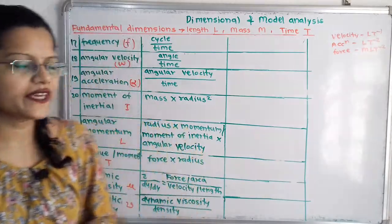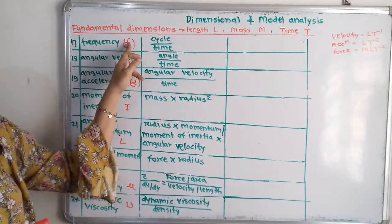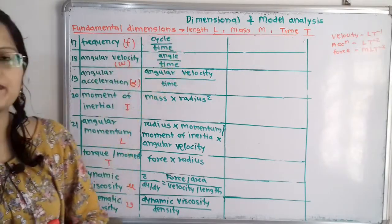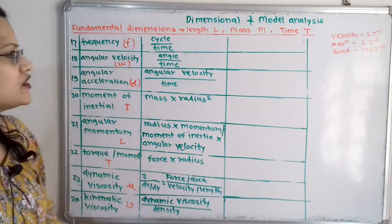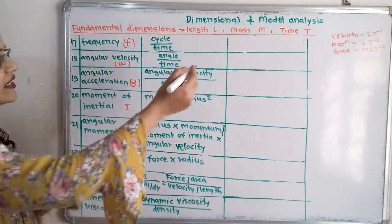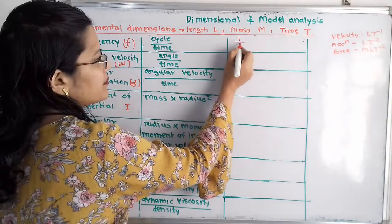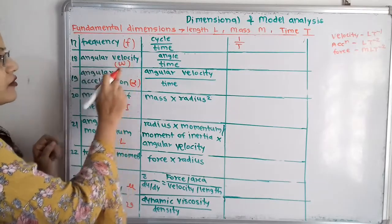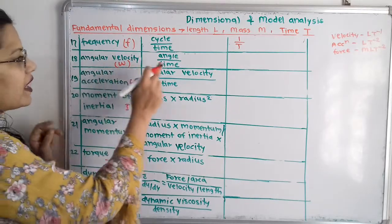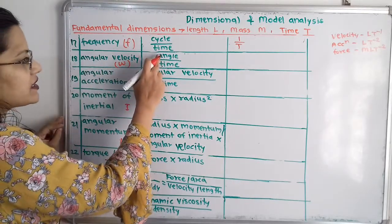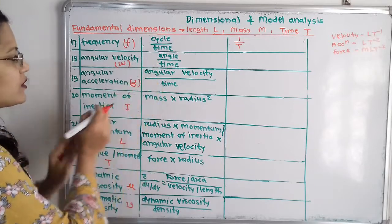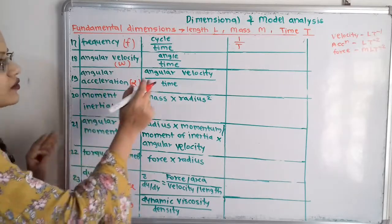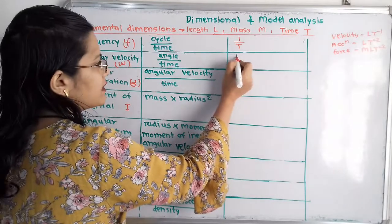Next is frequency, notation small f, that is cycle by time. Cycle is dimensionless, so the dimension is 1 by T, i.e., T raised to minus 1. Then angular velocity, notation omega, equals angle by time. Since angle is dimensionless, the dimension is also 1 by T.